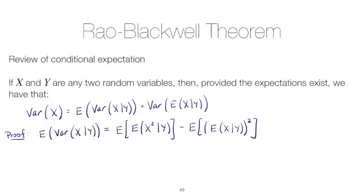The next step is to notice that this first expectation, by the law of total expectation, is just the expected value of x squared. So we can rewrite the first term as the expected value of x squared by the law of total expectation, and keep the second term the same for now.